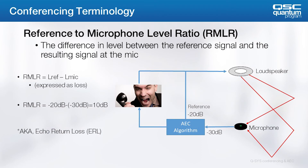The Q-SYS AEC algorithm employs a concept known as Reference to Microphone Level Ratio, or RMLR, to help us properly calibrate the system. This is analogous to another term common to AEC systems — echo return loss, or ERL. It represents the natural loss through the output gain structure, through the room, and back to the microphone. The RMLR represents the difference between the level at the reference and the resulting signal heard at the microphone.